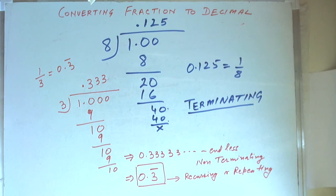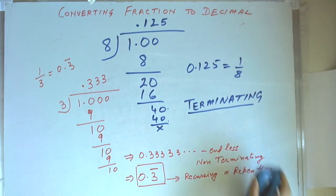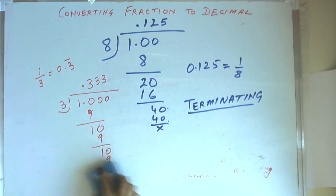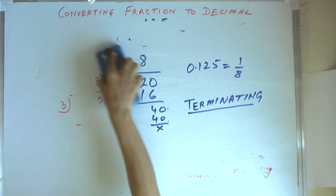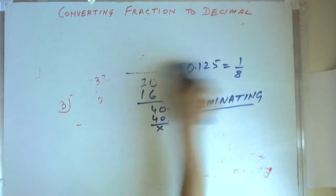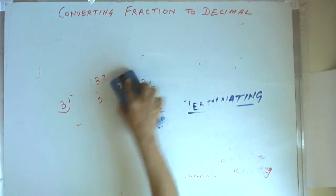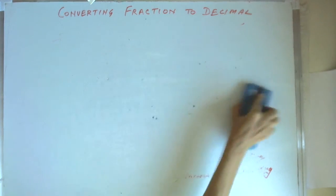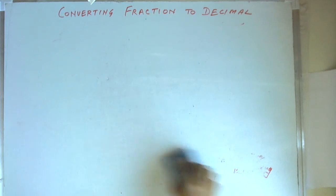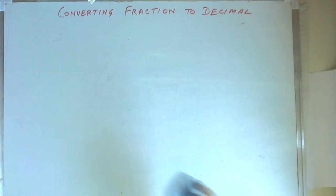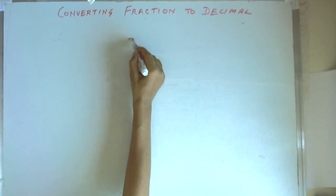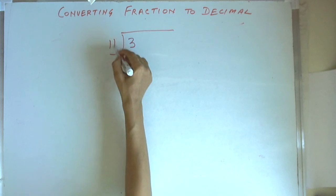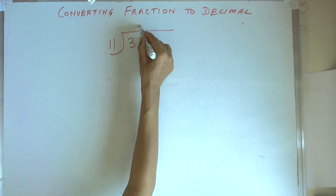Now take another example. Let us take 3 by 11. If we take 3 by 11, we follow the same method. The numerator is 3 and the denominator is 11. We take 3 here and divide by 11. We put a decimal and a 0.